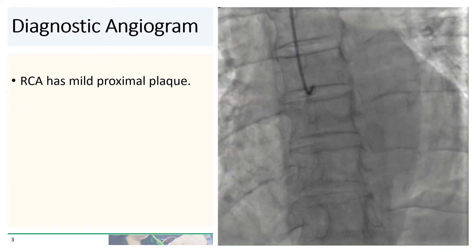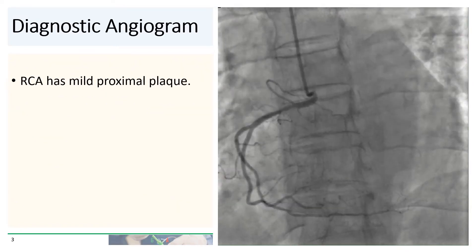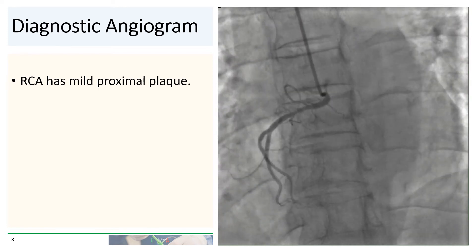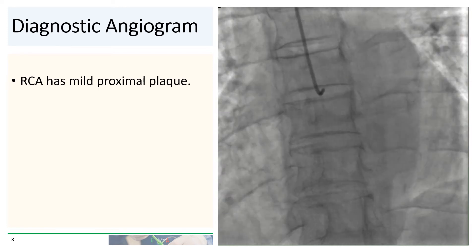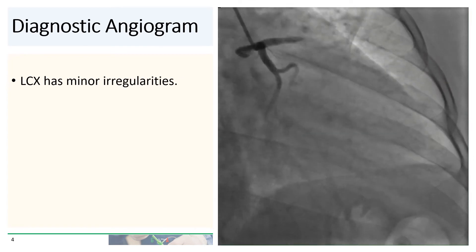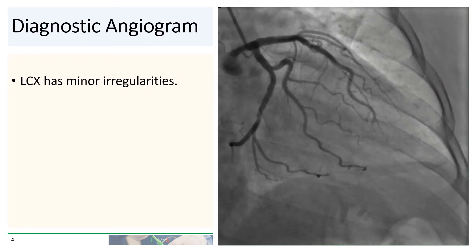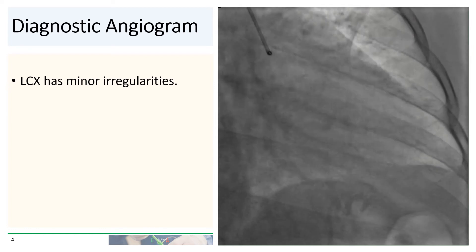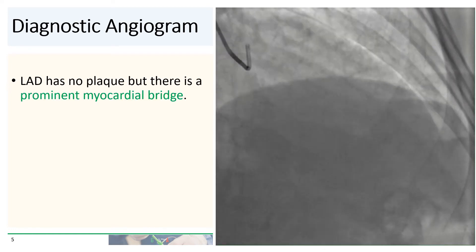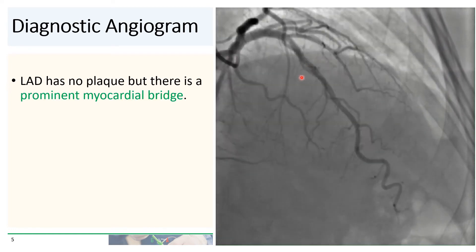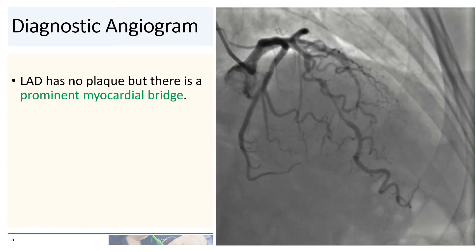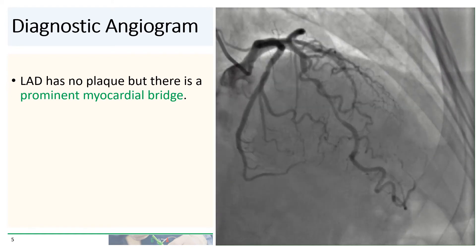On diagnostic angiogram, the RCA has a minor proximal plaque. The left circumflex has mild irregularities. The LAD has no significant plaque, but there is a long and very prominent myocardial bridge in the mid-LAD.